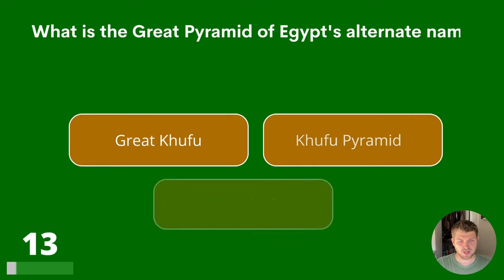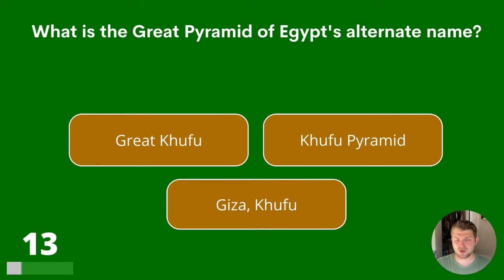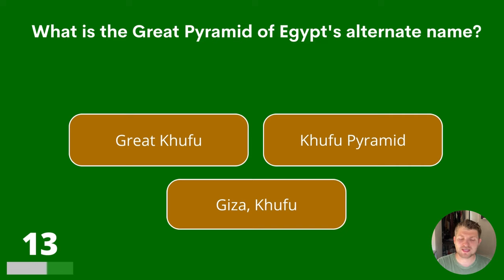Question 13. What is the Great Pyramid of Egypt's alternate name? Great Khufu, Khufu Pyramid or Giza Khufu?